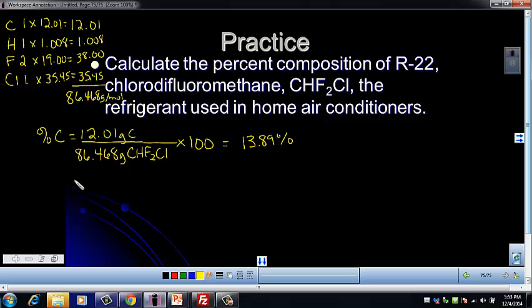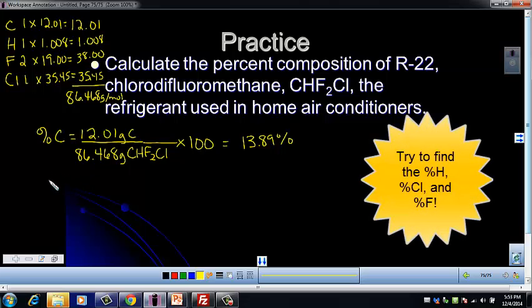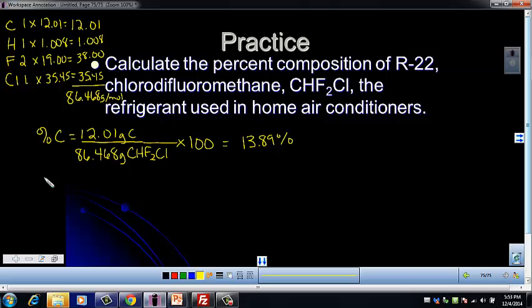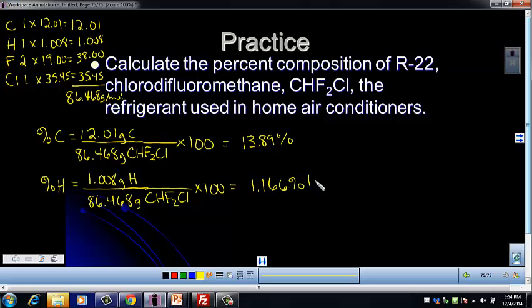See if you can do the hydrogen, fluorine, and chlorine. Go ahead and pause the video and then check your answers. That way you can kind of skip ahead. And if you have any questions, you can always ask me in class. Alright, so percent hydrogen is going to be 1.008 grams of hydrogen divided by 86.468 grams of CHF2Cl. Don't forget to multiply by 100. And don't forget that unit. So that's going to be 1.166% hydrogen. Again, don't forget, oh I forgot to put the carbon there. Don't forget the percent because that's your unit.